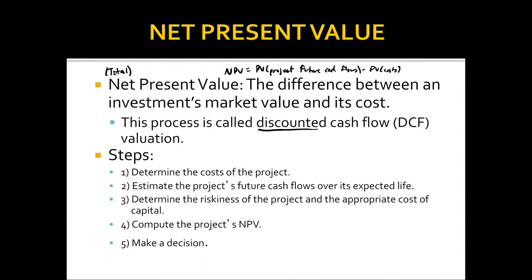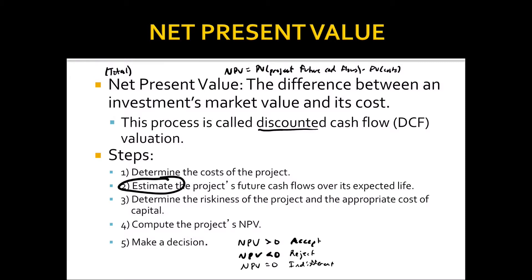The decision rule is based on a value of zero. If NPV is greater than zero, the present value of cash inflows exceeds the present value of costs, so you accept the project. If NPV is less than zero, the costs exceed the cash inflows and you reject the project. If NPV equals zero, we are indifferent — it neither adds nor decreases company value. Since all cash flows are estimates, a zero NPV project warrants further examination of the accuracy of your projections.